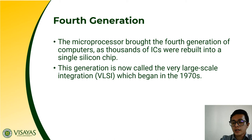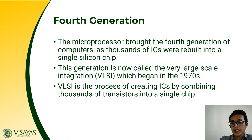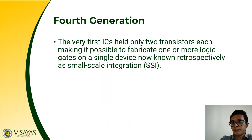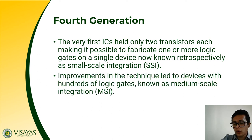In the fourth generation, this is called VLSI, or Very Large Scale Integration, which began in the 1970s. VLSI is a process of creating ICs by combining thousands of transistors onto a single chip. This single microprocessor contains thousands of integrated circuits. The very first integrated circuits held only two transistors each, making it possible to fabricate one or more logic gates on a single device — known as SSI, or Small Scale Integration.